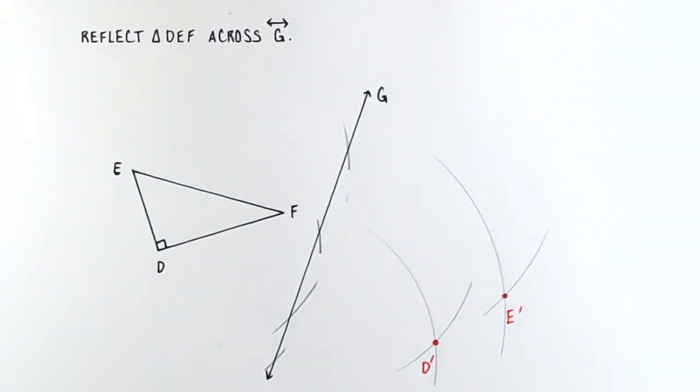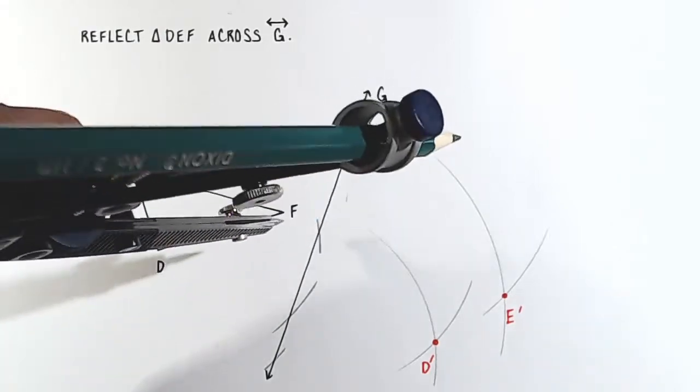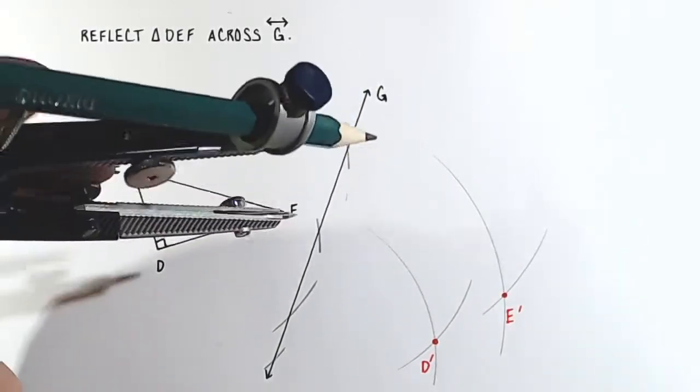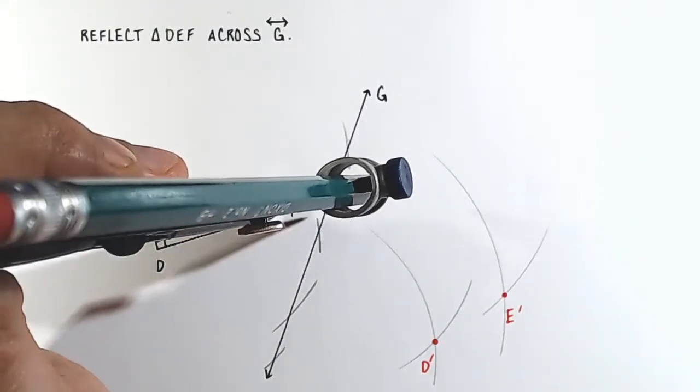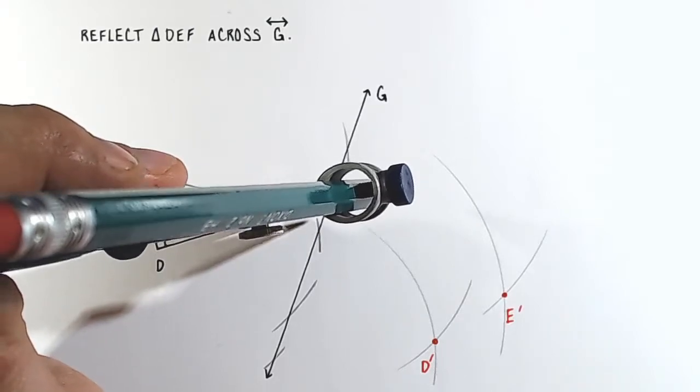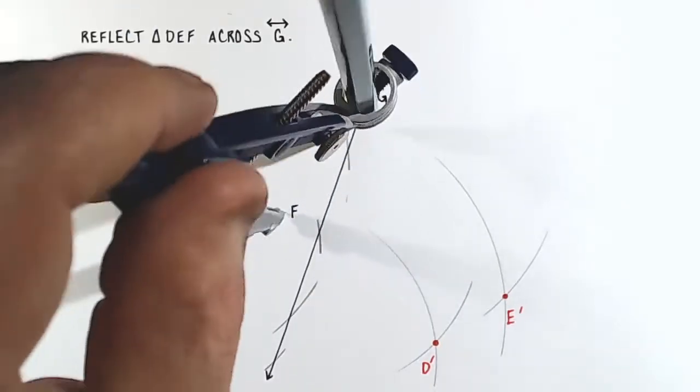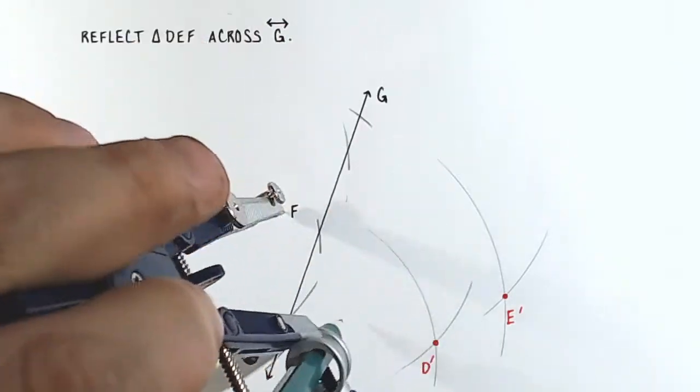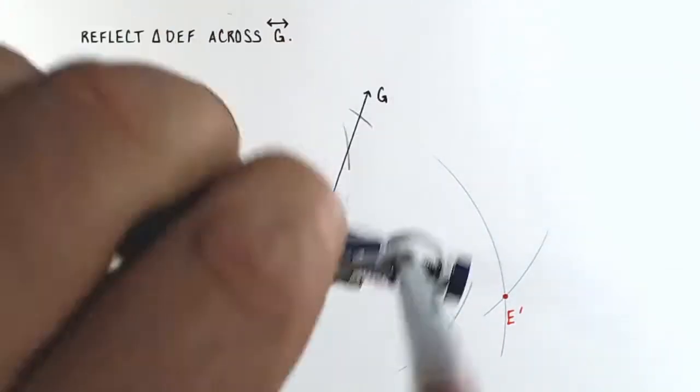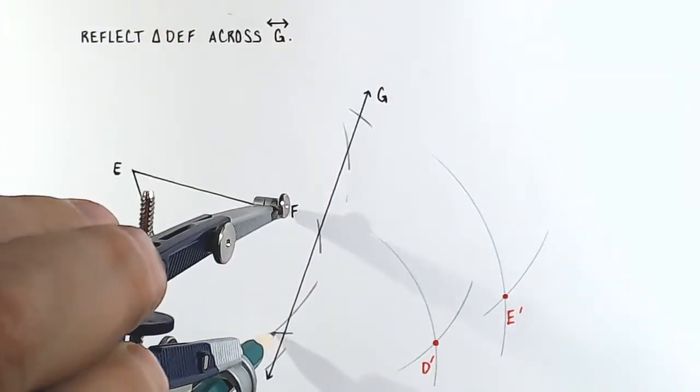And now I'll find point F prime. Shorten the radius of your compass. Place the point at F. And now draw two arcs crossing the line of reflection. One there, and one down here.